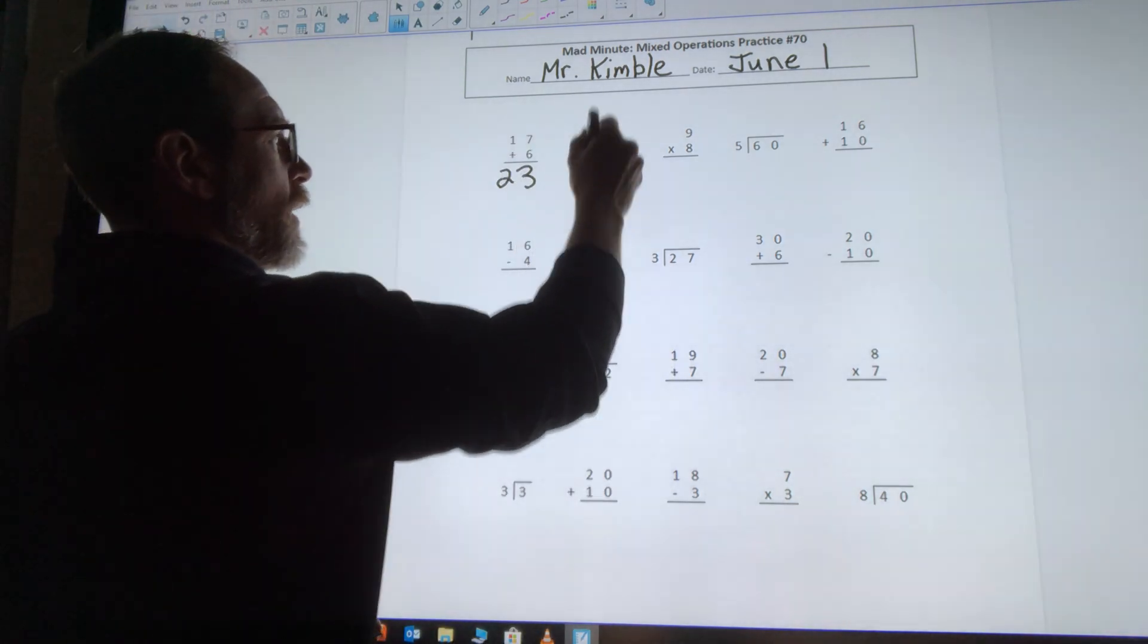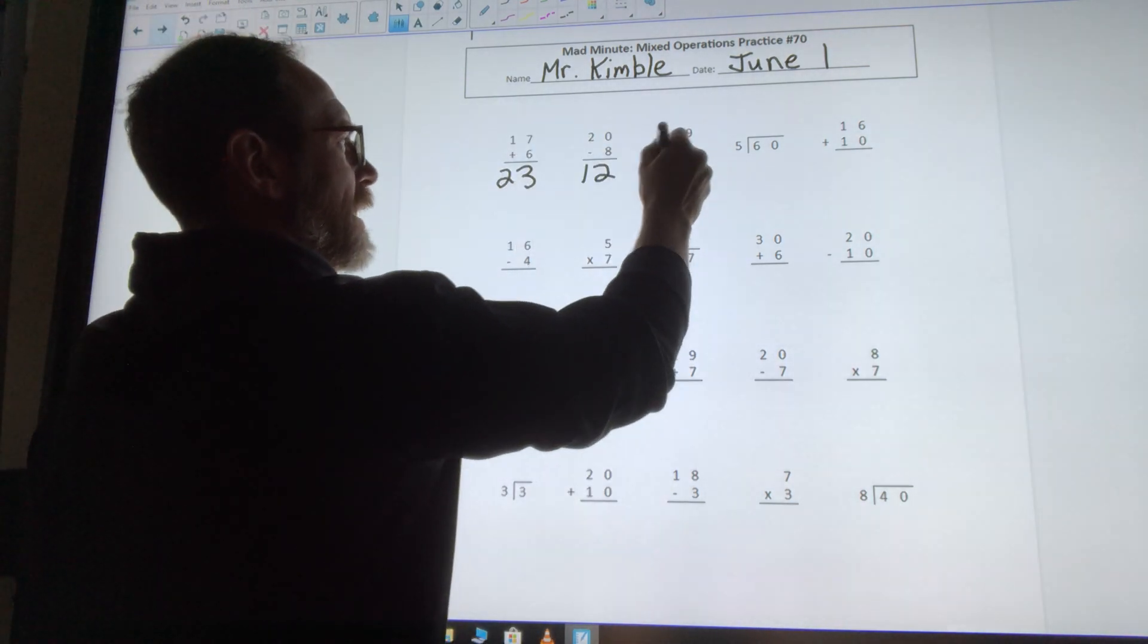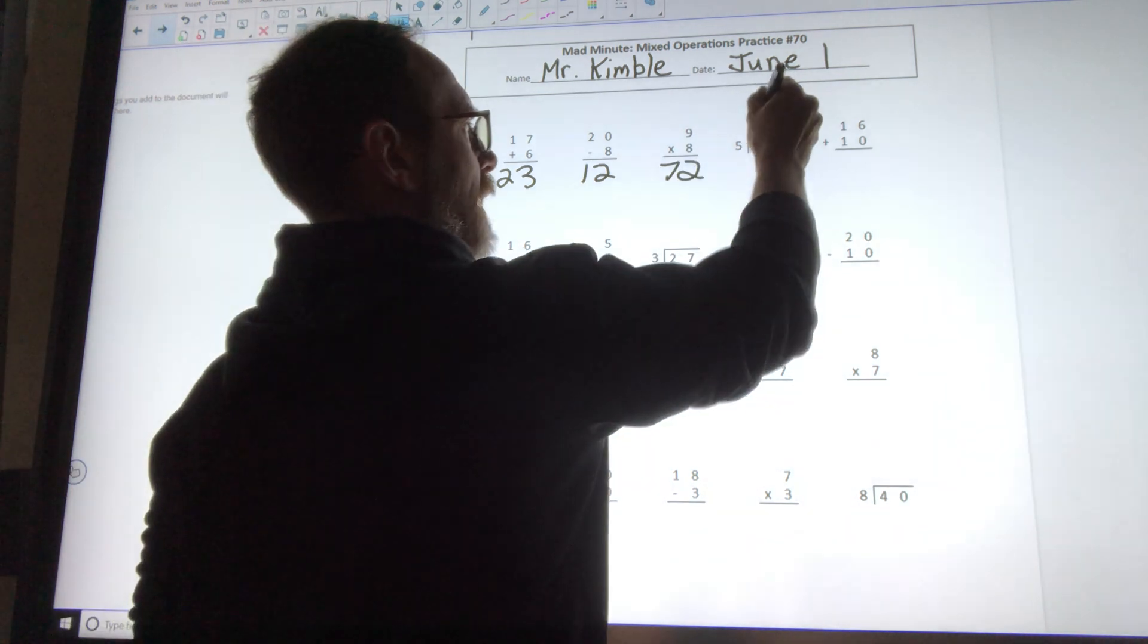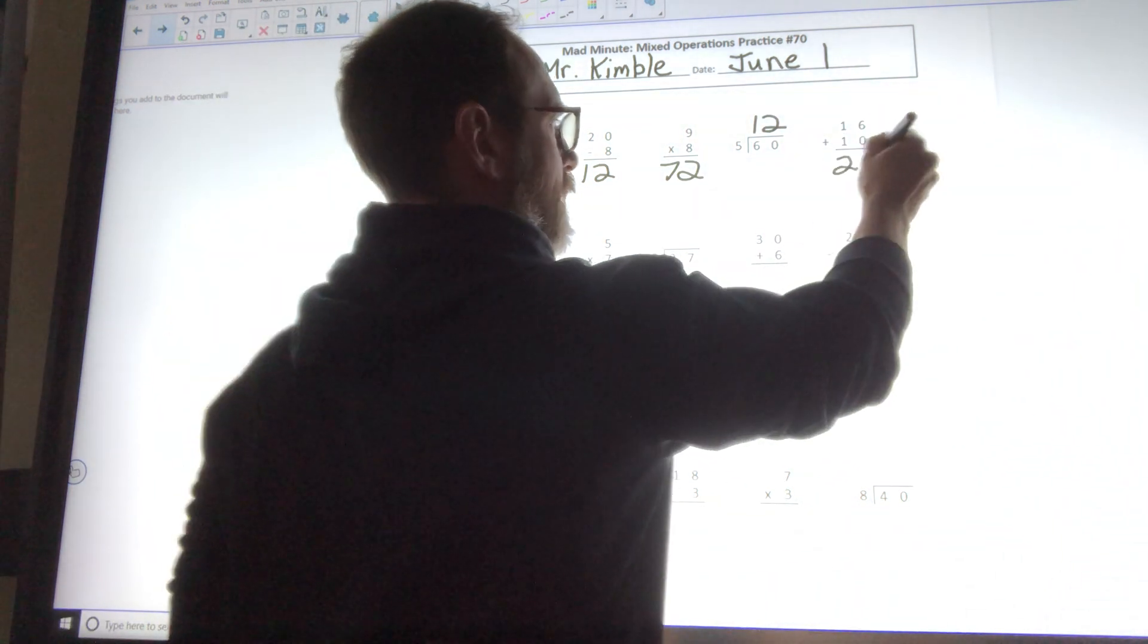17 plus 6 is 23, 20 minus 8 is 12, 9 times 8 is 72, 60 divided by 5 is 12, 16 plus 10 is 26.